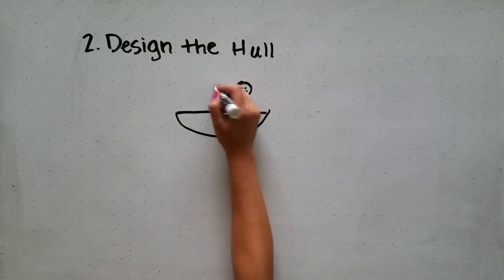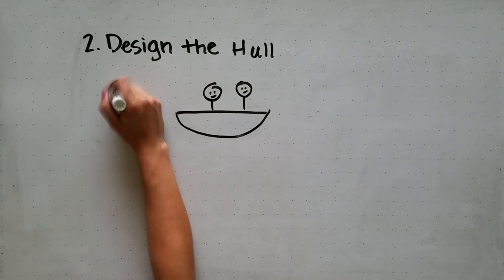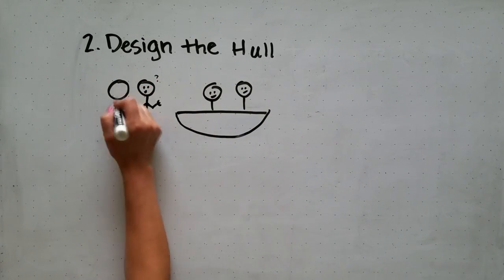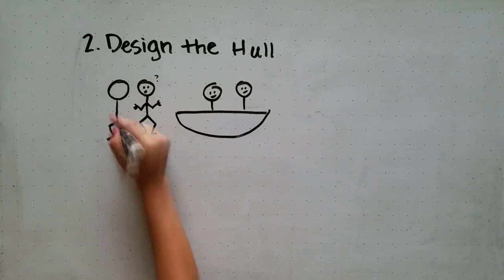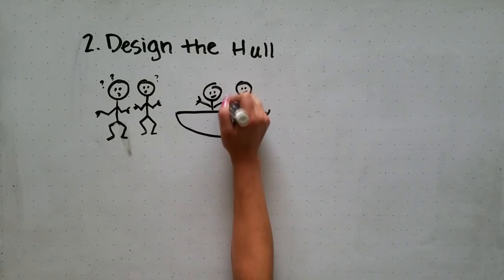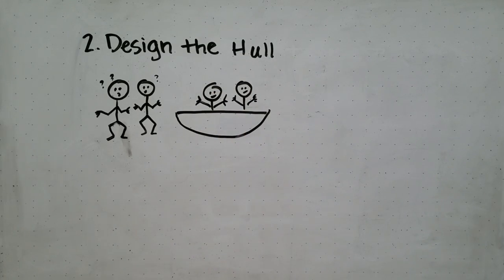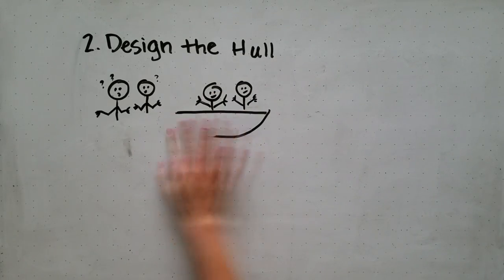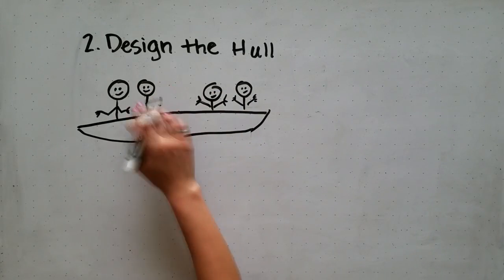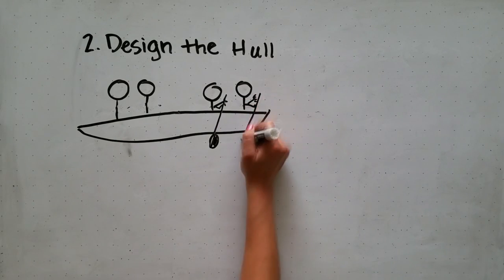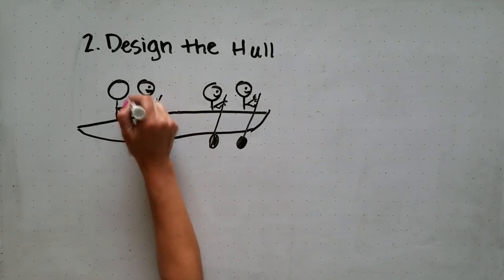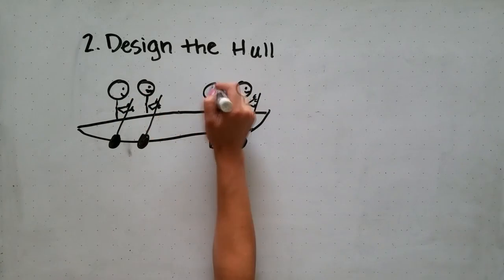The geometry of the canoe is going to make a big difference in how it performs in the water. The next thing to consider is the length. A shorter canoe is actually going to go less fast at its top speed, and you obviously have to make the canoe long enough to fit all of the people in it.